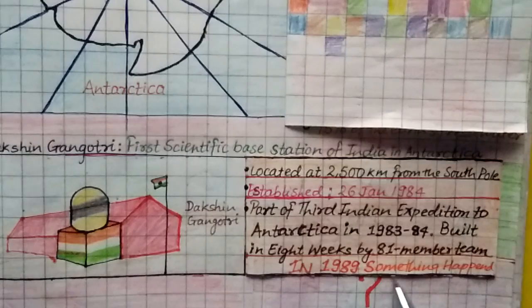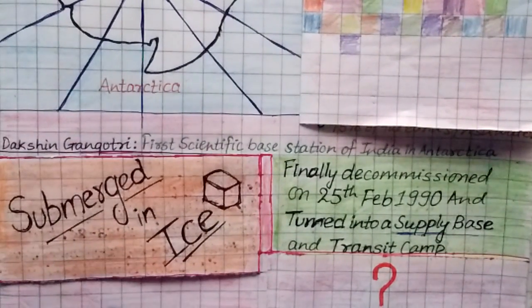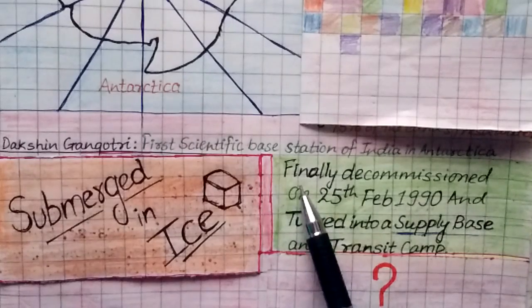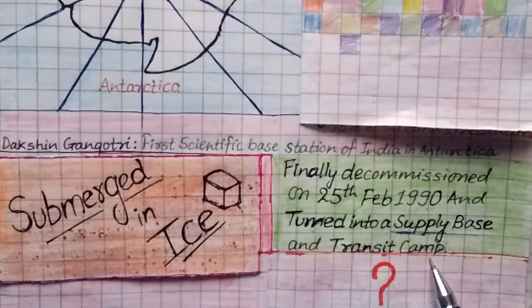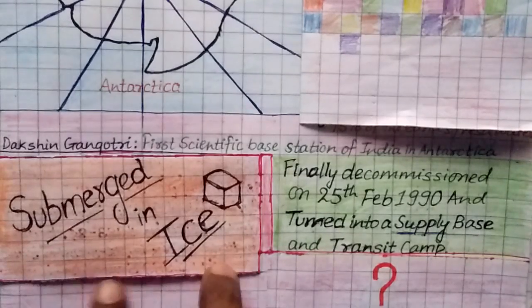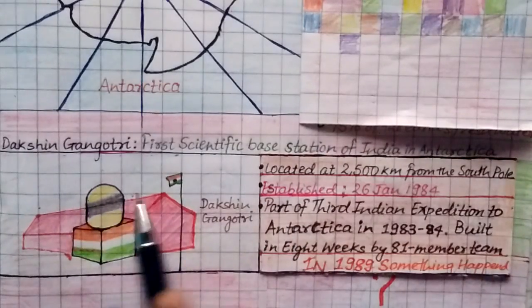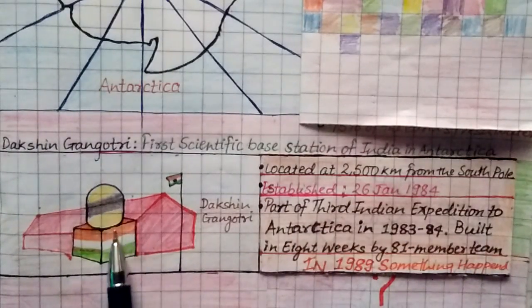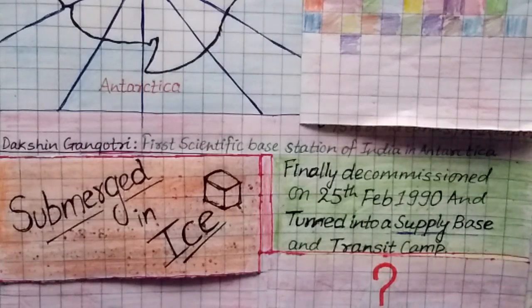In 1989, something happened to Dakshin Gangotri — it became totally submerged in ice. Finally, on 25th February 1990, it was decommissioned as a research station and turned into a supply base and transit camp. So now Dakshin Gangotri serves only as a transit camp and supply base.